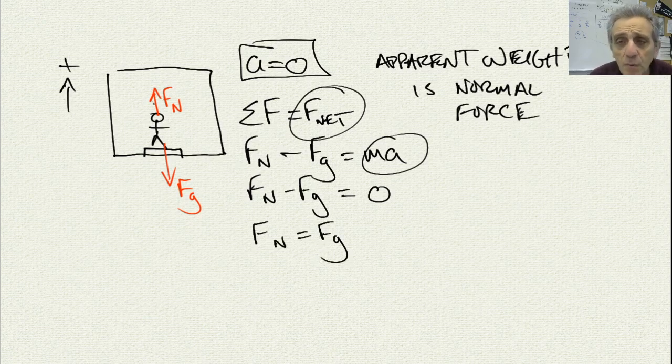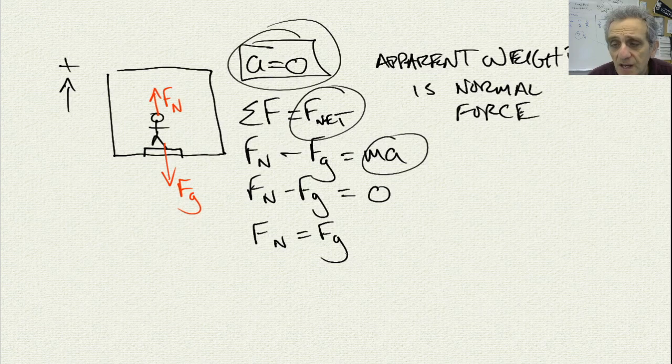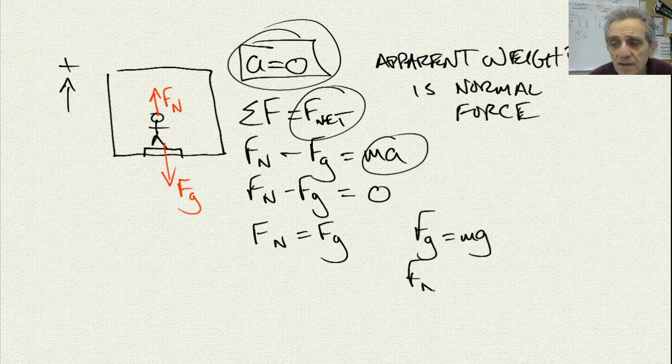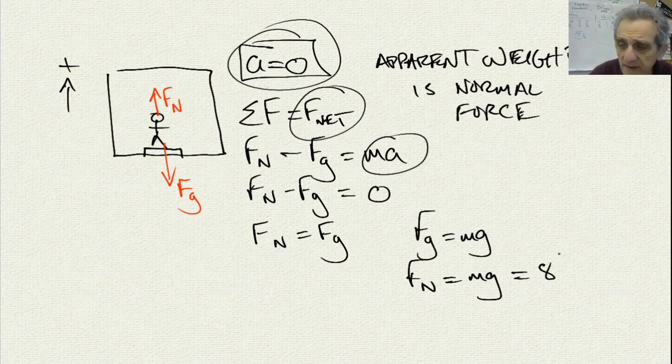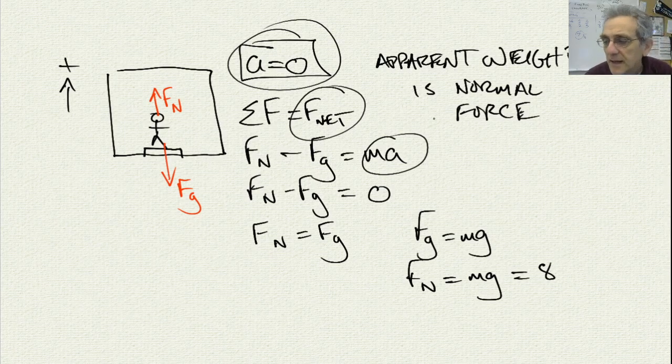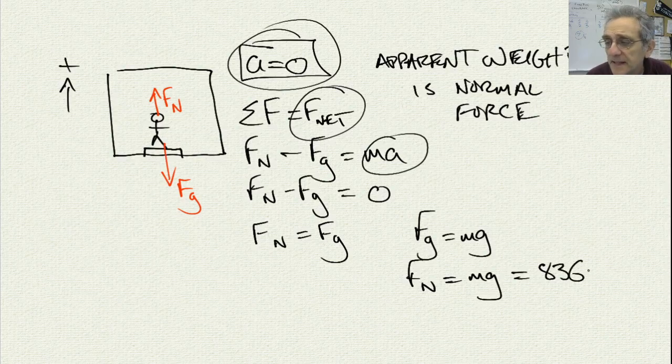That means the normal force, and remember, this elevator is not moving. That means that the normal force is equal to the weight of the person. So since I know the force of gravity is equal to Mg, now I know that the normal force is equal to Mg. And this is actually given to us as 836 Newtons.